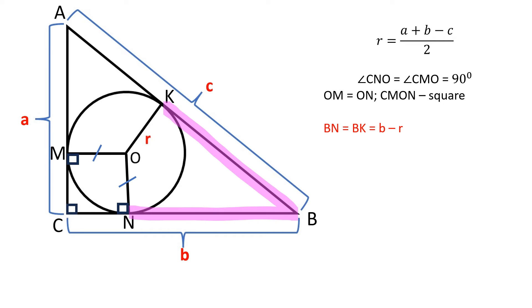Segments BN and BK are congruent and equal to B minus R. Also, segments AM and AK are congruent and equal to A minus R, because two tangent segments that are drawn from the same external point are equal.